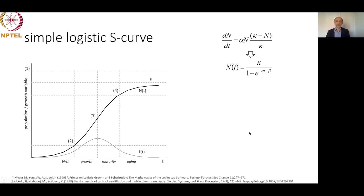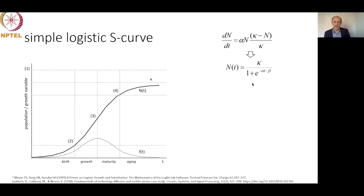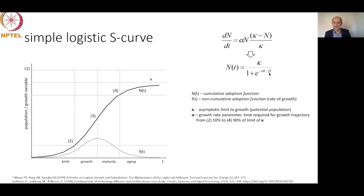The logistic function was first derived by a Belgian mathematician in 1835, based on the study of population growth in Europe. It is based on a differential equation describing the ratio of population change over time. One solution is: N(T) equals the upper limit of growth divided by one plus an exponential expression.